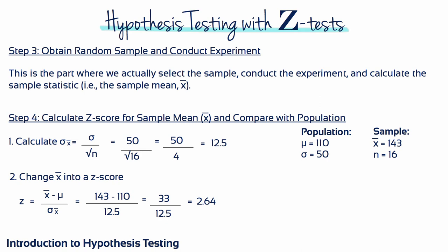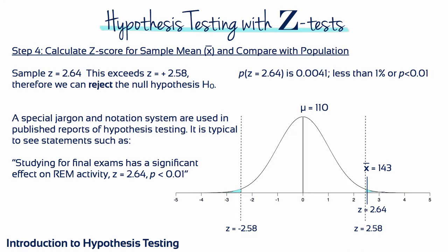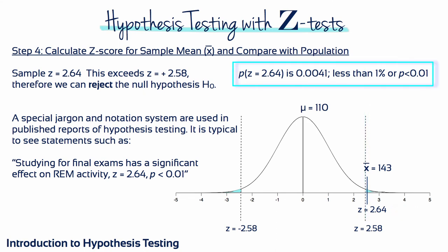Step 3 is where we do the experiment and calculate our sample mean. Then Step 4, we change that sample mean into a z-score — in this case, 2.64. Our sample z-score of 2.64 exceeds the upper critical region boundary of z equals 2.58. Therefore, we can reject the null hypothesis that nothing happened. The probability of obtaining a z-score of 2.64 is 0.0041, in other words less than 1%. We would report: studying for final exams has a significant effect on REM activity, z equals 2.64 with a p-value of less than 0.01.